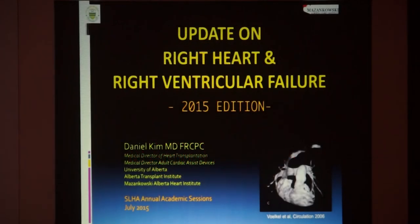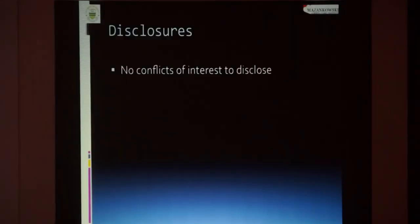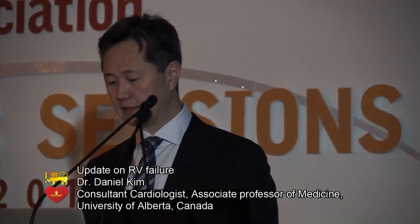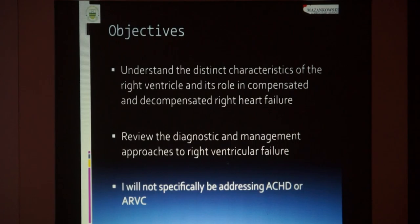My talk is a little bit more esoteric because, unlike the previous speakers, I don't have a lot of data and evidence to present, so there will be a lot of pretty pictures. What I'm hoping to talk about today is the specifics of right heart failure and right ventricular failure. I have no disclosures, and the objectives are to go over distinct characteristics of the right ventricle and its role in compensated and decompensated right heart failure, review diagnostic and management approaches, and I will not address adult congenital heart disease or arrhythmogenic right ventricular cardiomyopathy, as those topics are too large for this talk.